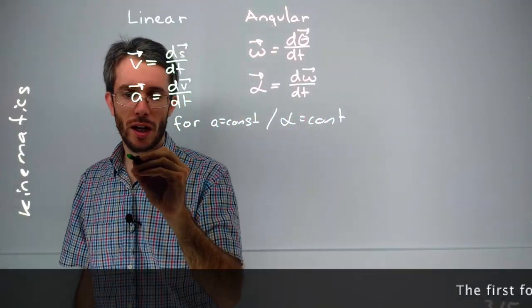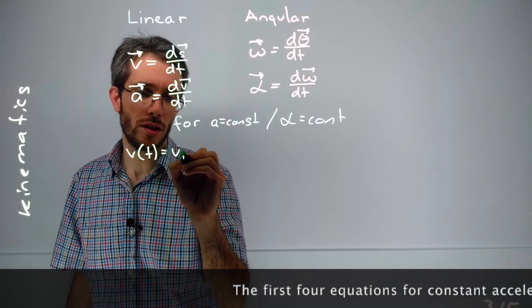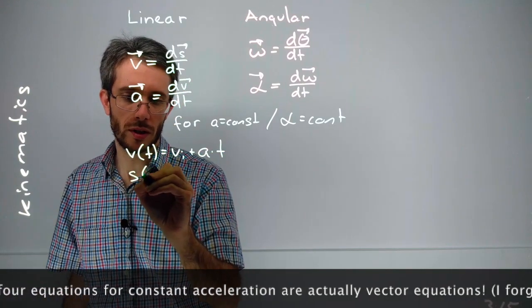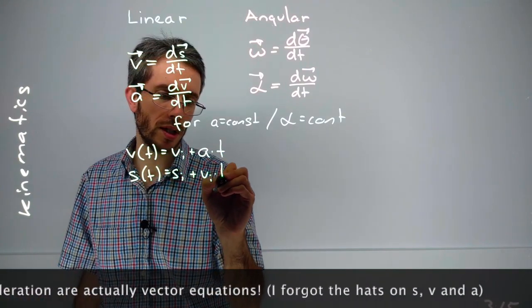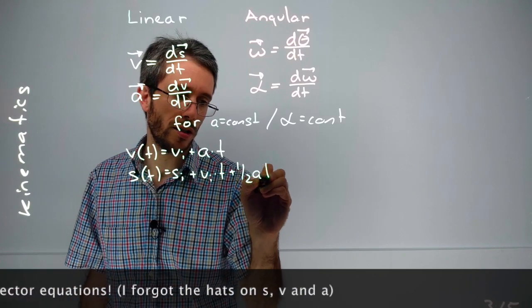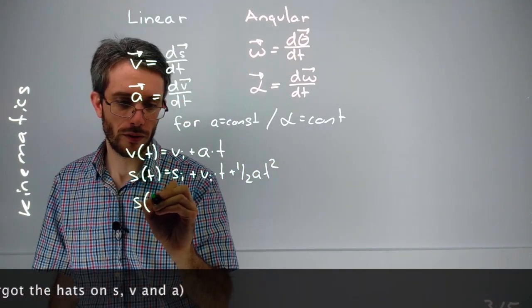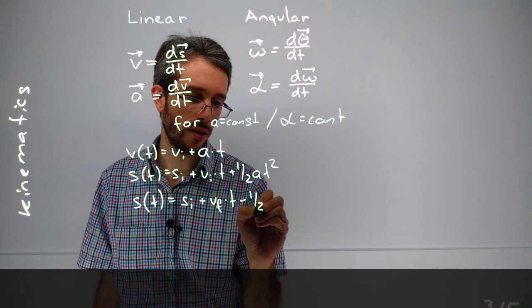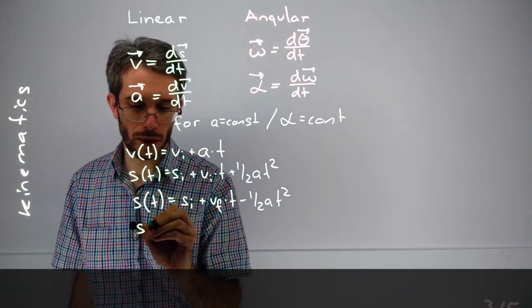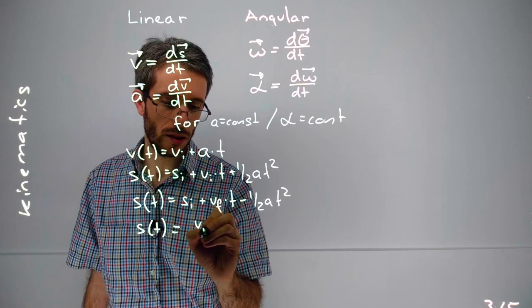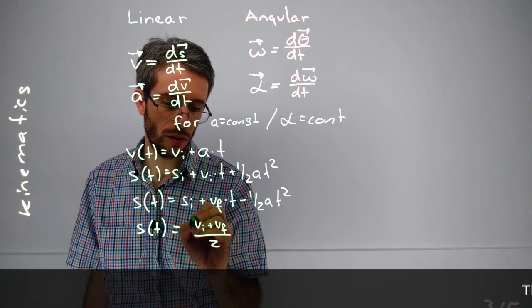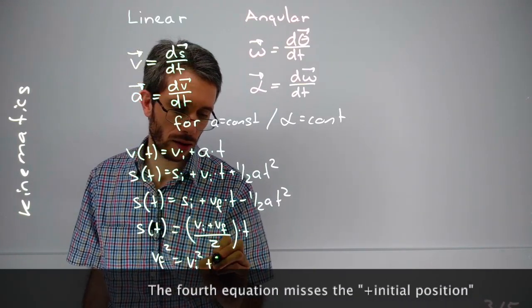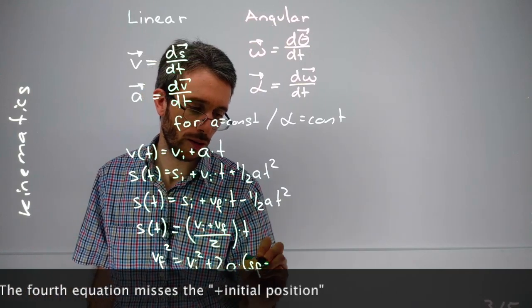So we had V as a function of time is V initial plus acceleration times time. Position as a function of time is position initial plus V initial times time plus one-half a t squared. Then we had position as a function of time is V initial plus V final times time minus one-half a t squared. Then we had position as a function of time is V initial plus V final over two times time. And then last but not least, V final squared is V initial squared plus two a times s final minus s initial.